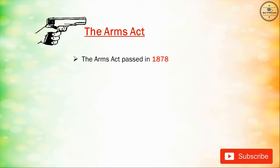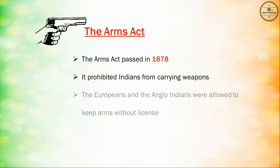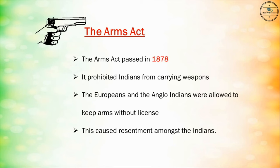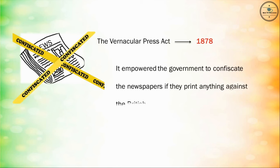The Arms Act was passed in 1878. It prohibited Indians from carrying weapons. However, Europeans and Anglo-Indians were allowed to keep arms without a license, which caused resentment among the Indians. In the same year, the Vernacular Press Act was also enacted. It empowered the government to confiscate newspapers if they printed anything against the British government.